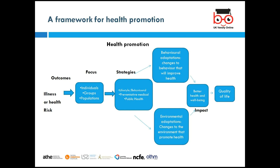For example, with smoking, it's a behavior change — you have to change the way you smoke. With obesity, you need to change behavior: don't be sedentary; do more exercise. Environmental adaptation means changes to the environment that promote health. If you want to promote health, you need to provide playgrounds, green spaces, and bins for litter. These all impact on better health, well-being, and quality of life.